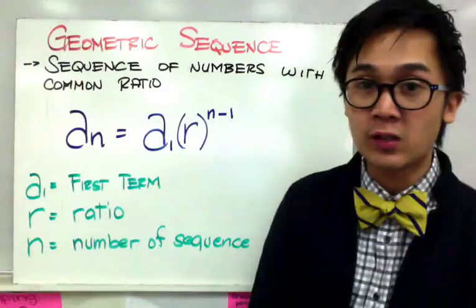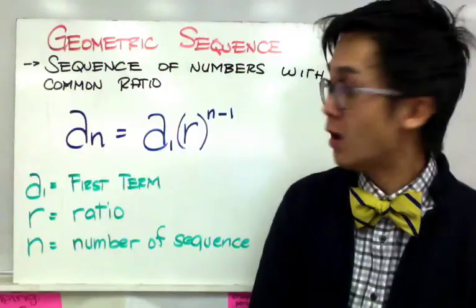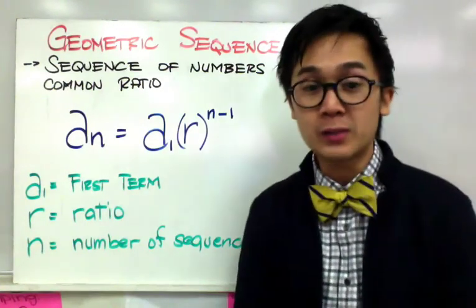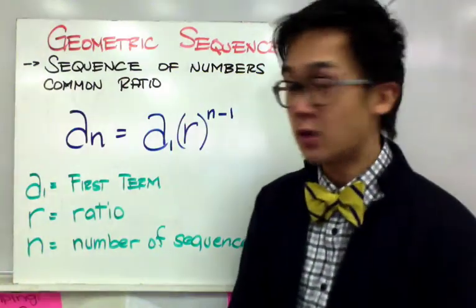Now a sub 1 is the first term, r will be the common ratio for our sequence, and n is the number or the specific number in the sequence that we are going to find later on.